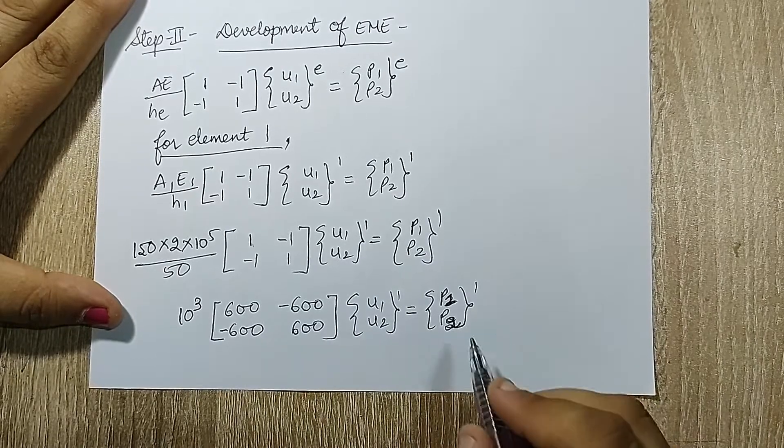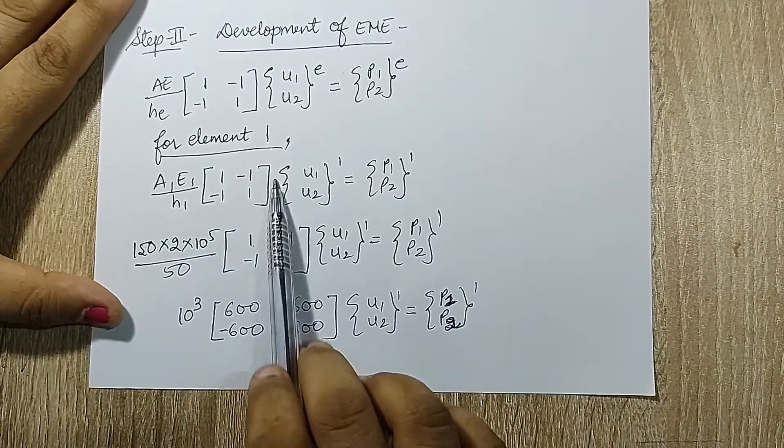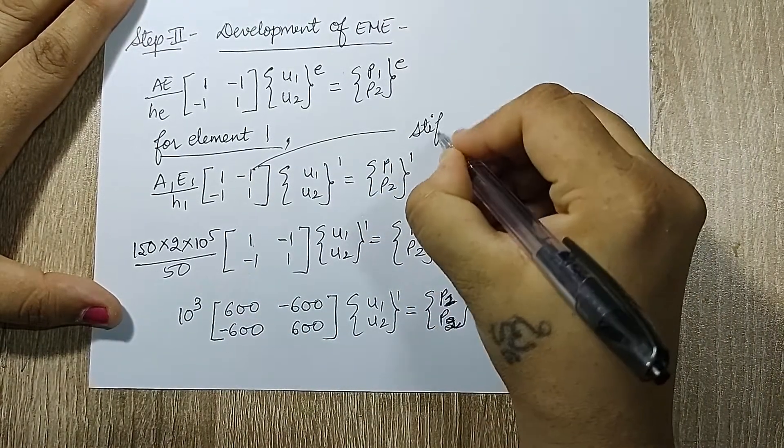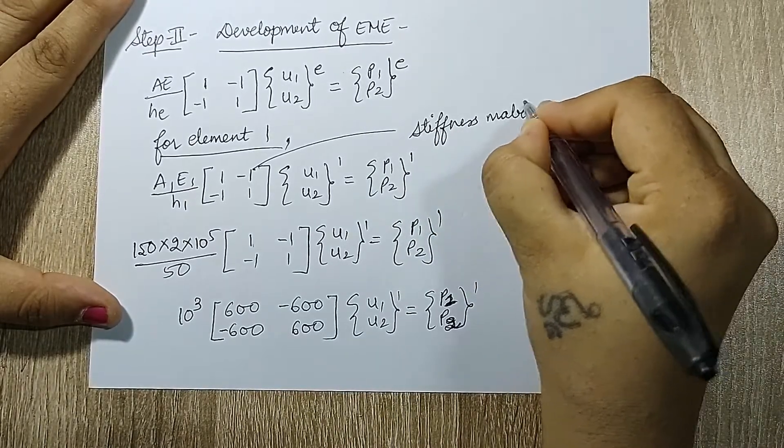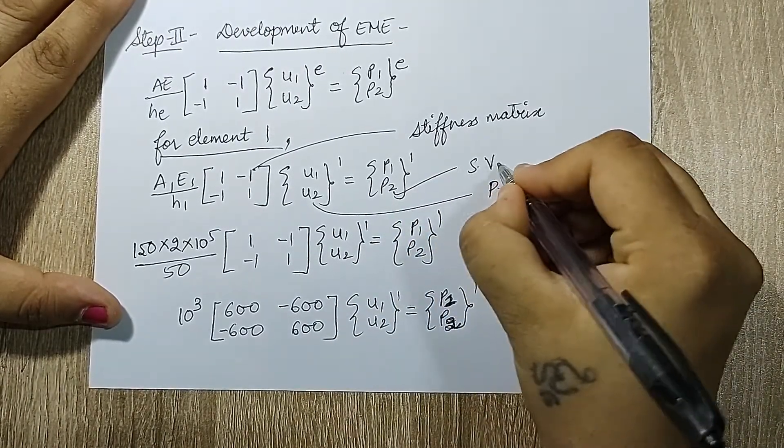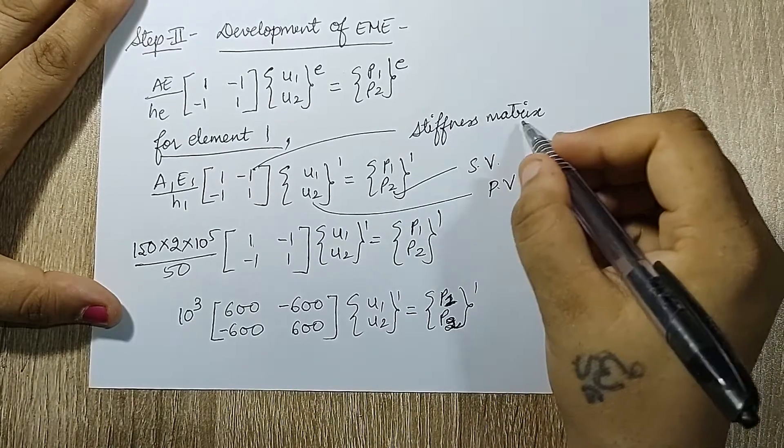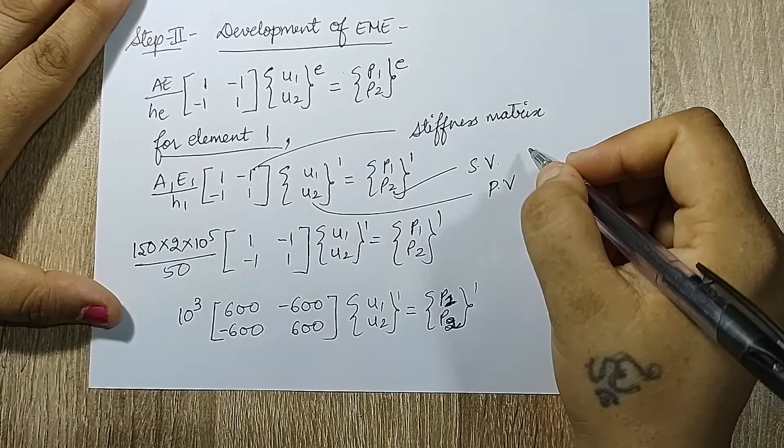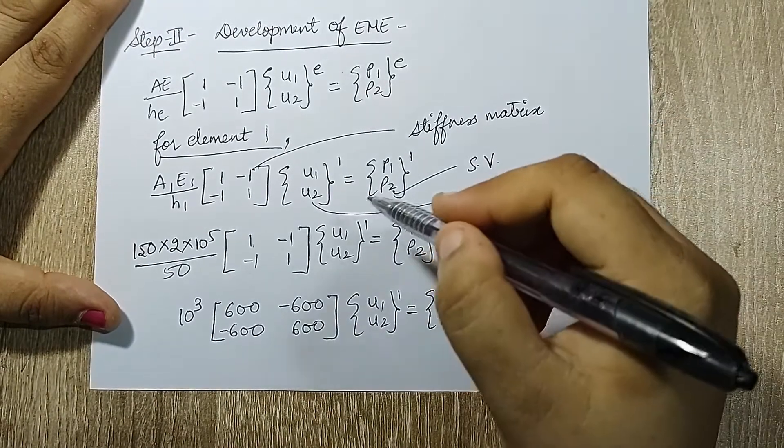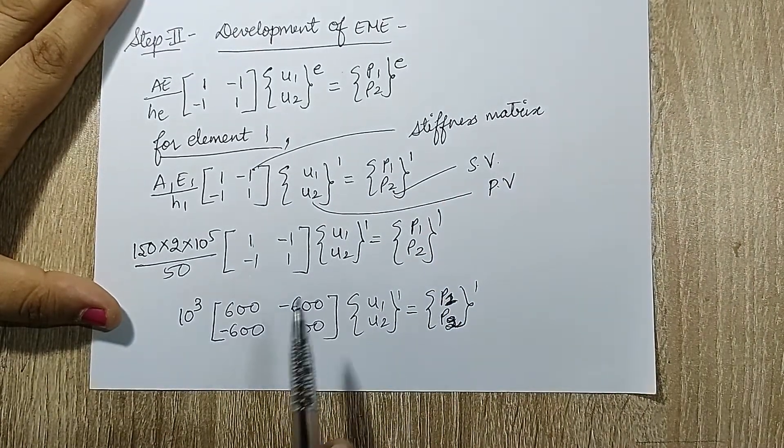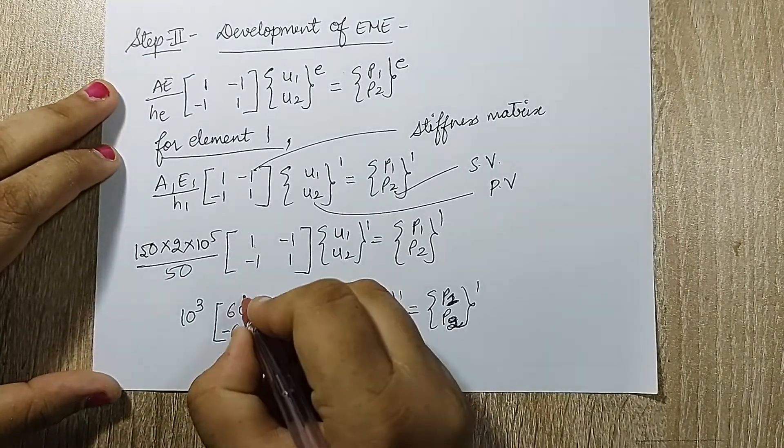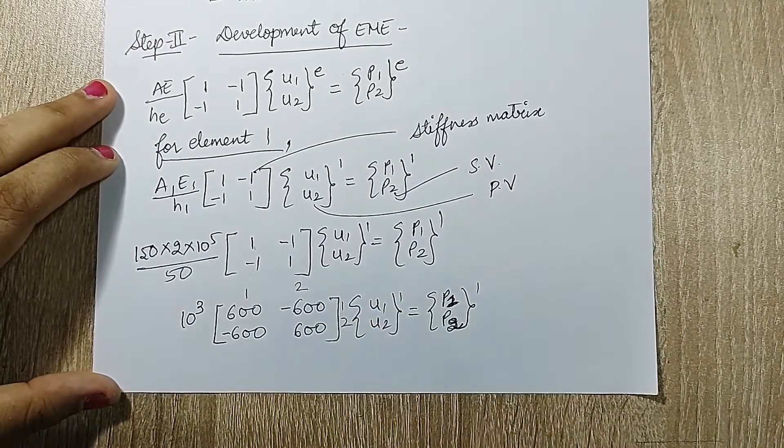There are few terms I did not mention in the previous session. The square matrix over here is called the stiffness matrix. The variables over here are called primary variables and this is called secondary variable. The other thing which you need to remember is these brackets which are used are specific to these terms and they should not be changed. Write the brackets which are given to you in the standard format. This is for element 1. Element 1 is between node 1 and 2.